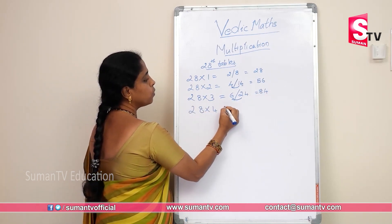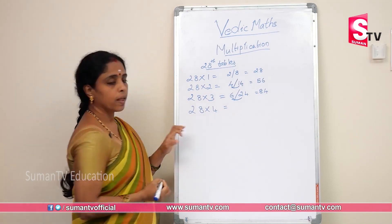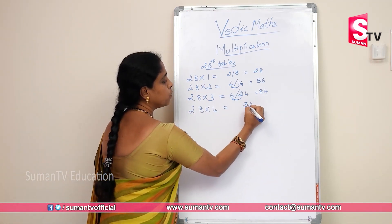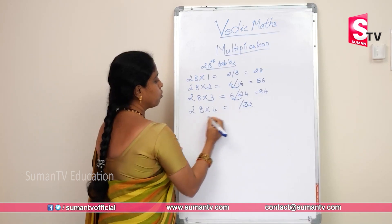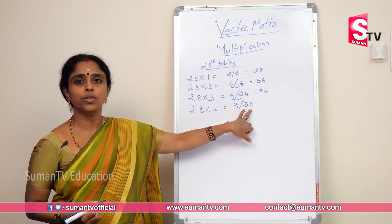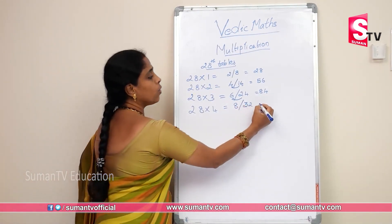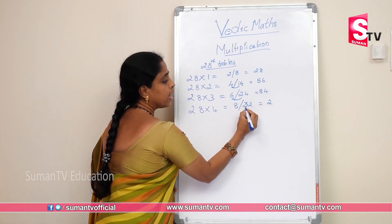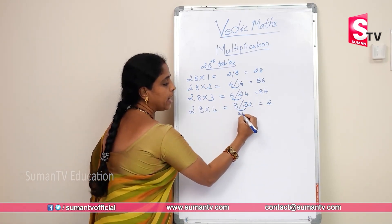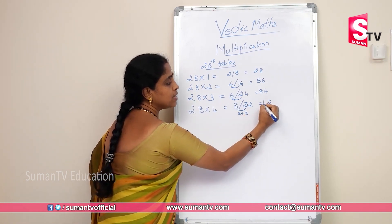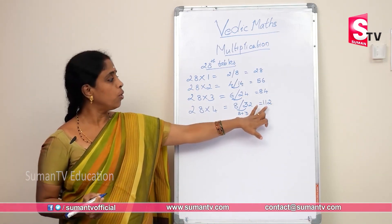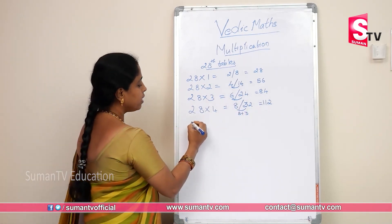28 into 4. 4×8 = 32. 4×2 = 8. In the units place, write 2 only. Then 8 plus 3 — what we are doing: 8 plus 3 is 11. So 28 into 4 is 112.